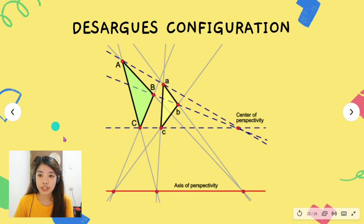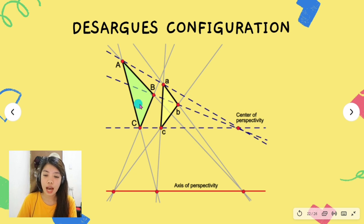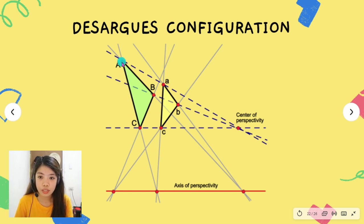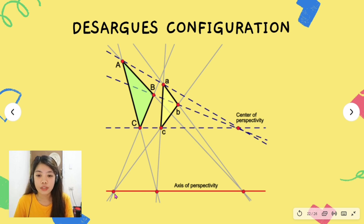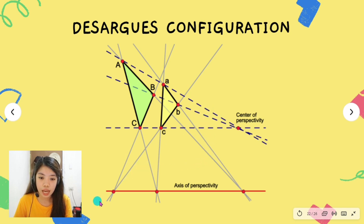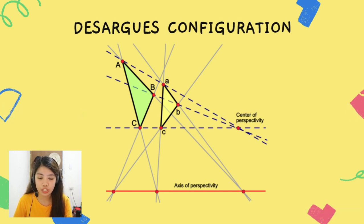This is the illustration of the Desargues configuration. Based on the definition, the Desargues configuration has 10 points and 10 lines, which is confirmed by the illustration. And that is the Desargues configuration.